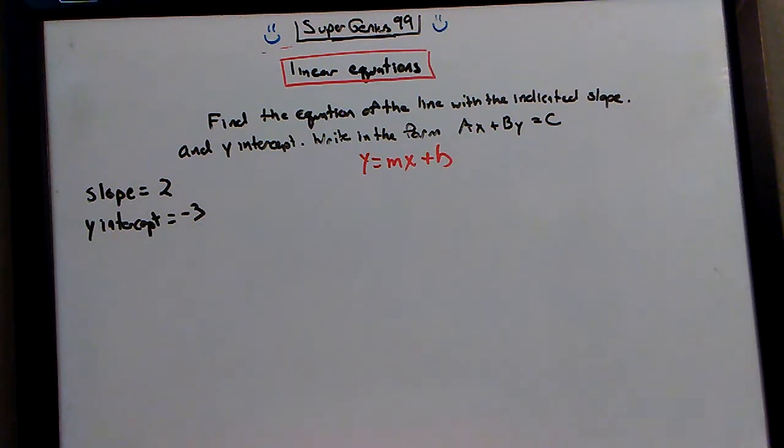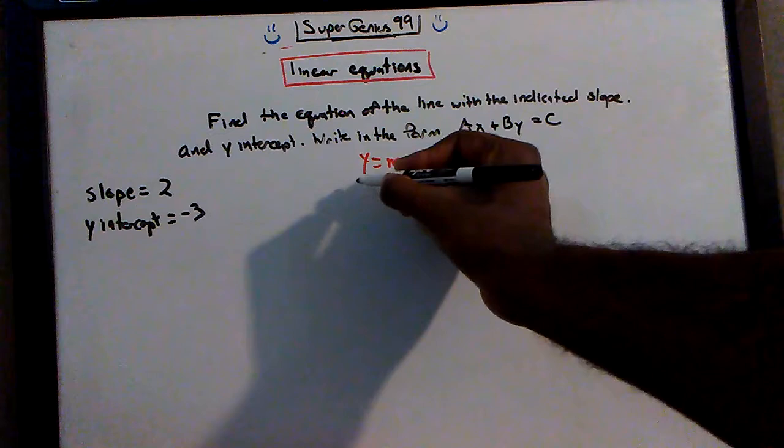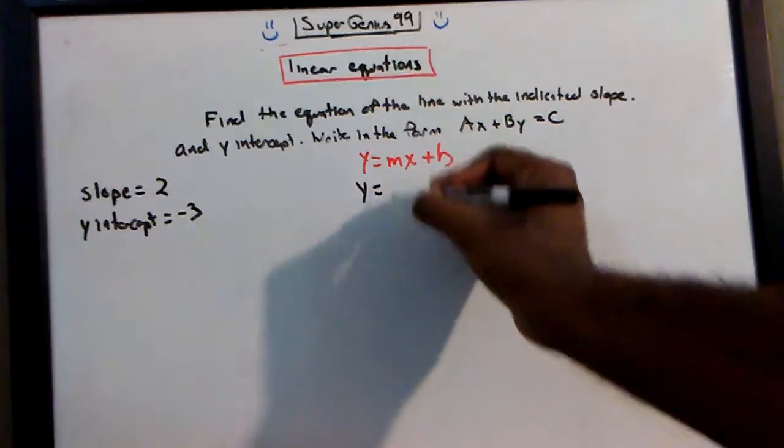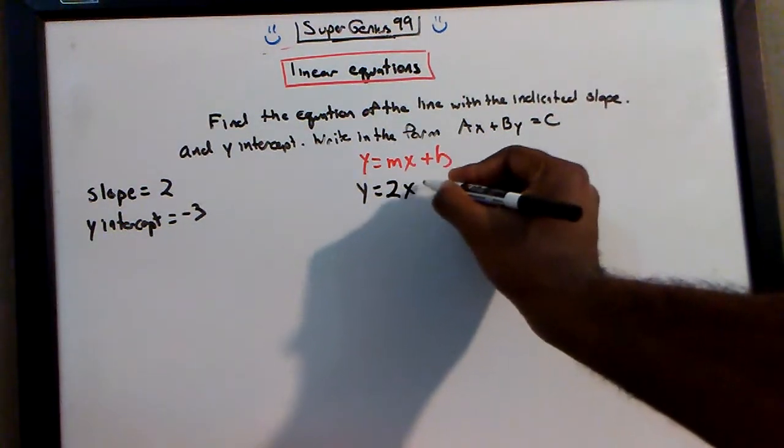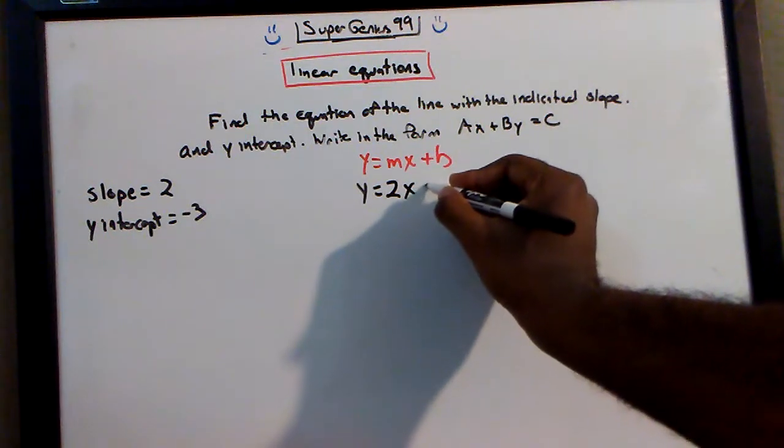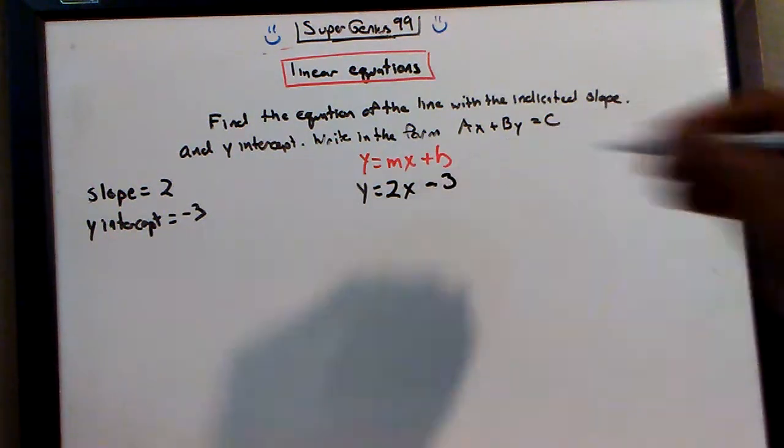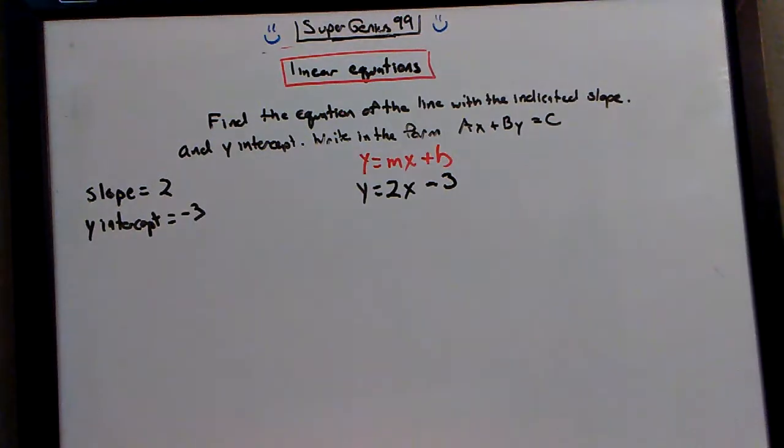So when you have your slope and your intercept, just fill it in. y equals my slope times x plus my y-intercept. In this case, this is negative 3, so we can just put minus 3.